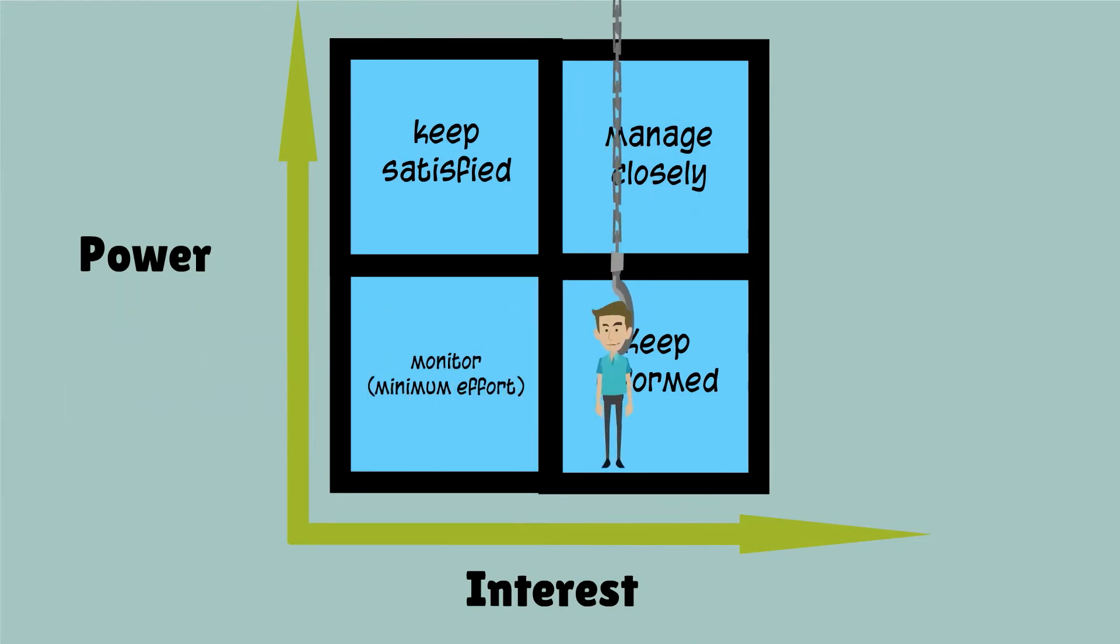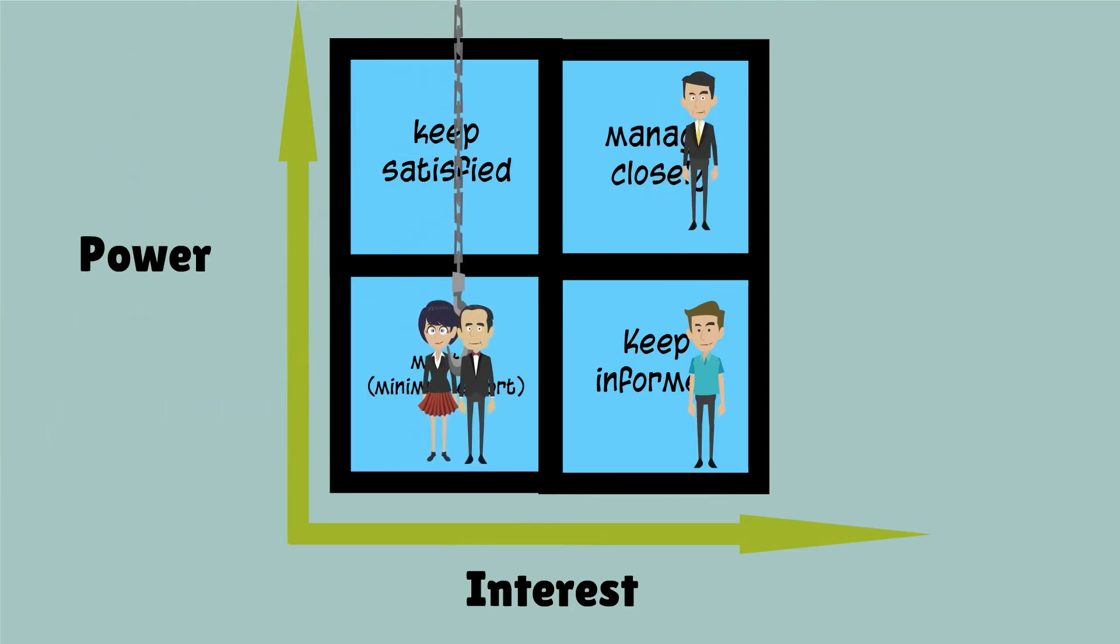In your project, Tim has a high interest but low power, so he needs to be kept informed. Daniel has a high interest and a high level of power, so he needs to be managed closely. And Anne and Bob both have low interest and low power. They just need to be monitored.